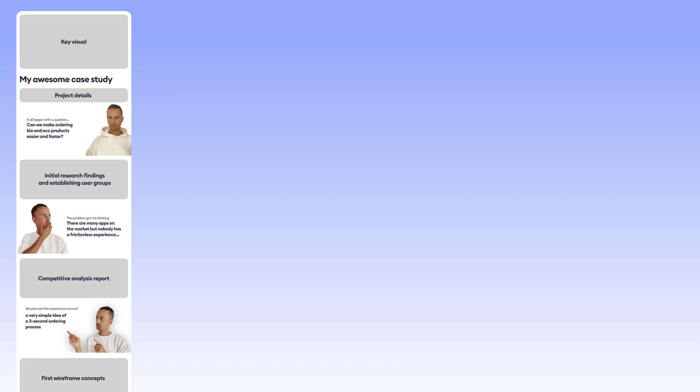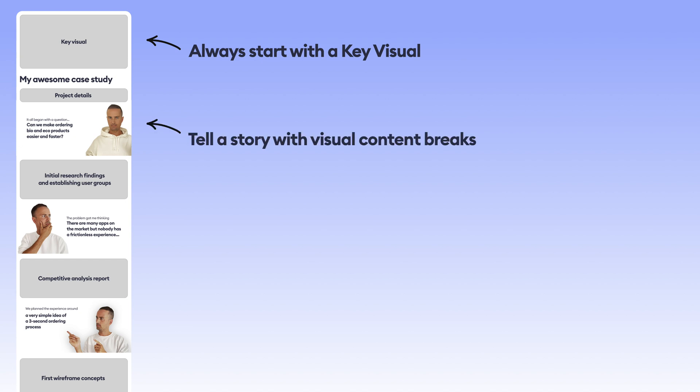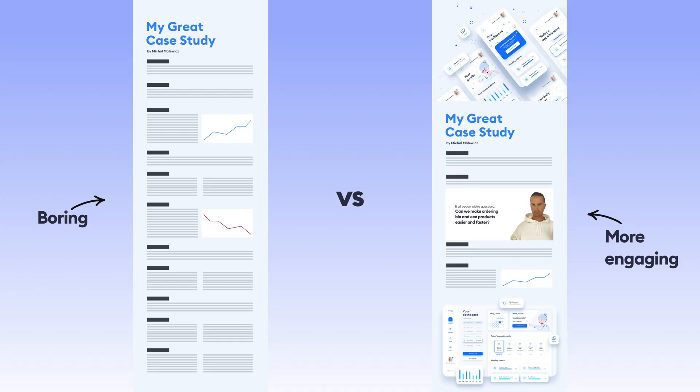Start with the first avatar to begin telling the story, and place the last one near the end of the case study, distributing the others in between the main content sections. If you have more than five, you can create more personas or avatars to make it more interesting. Let it tell a story — not just a too-long, didn't-read block of text.